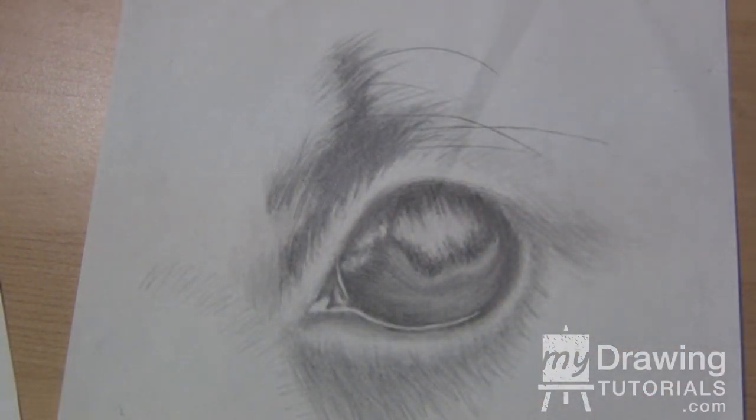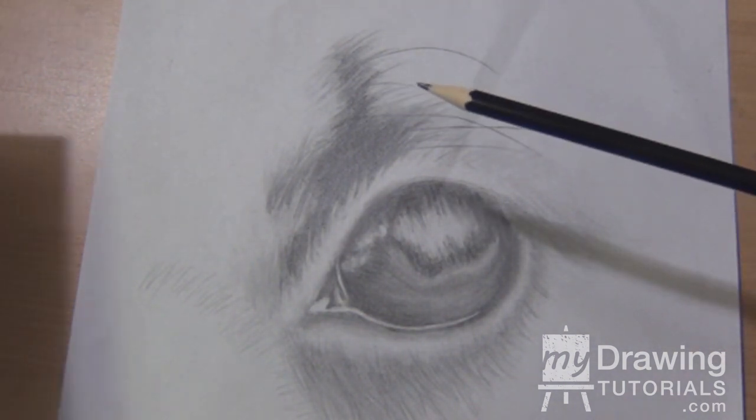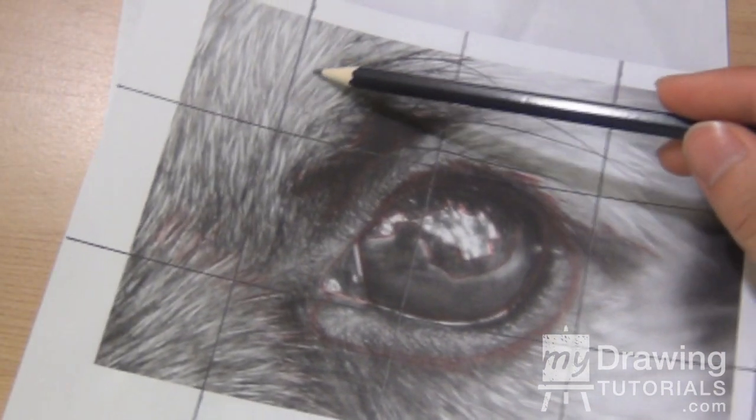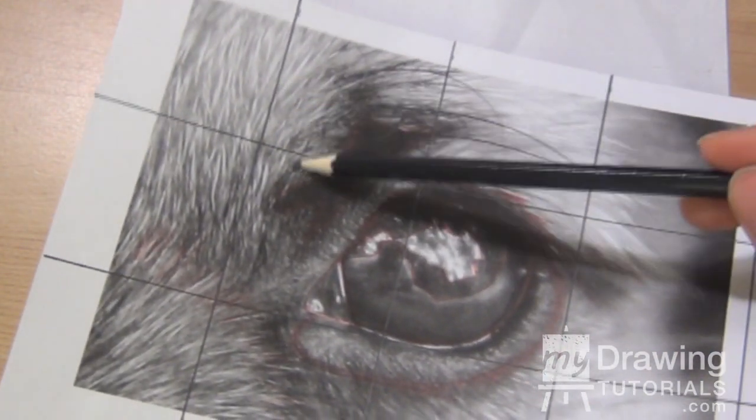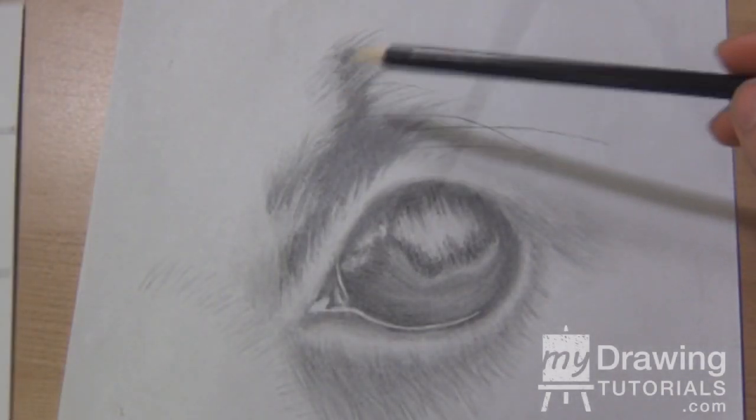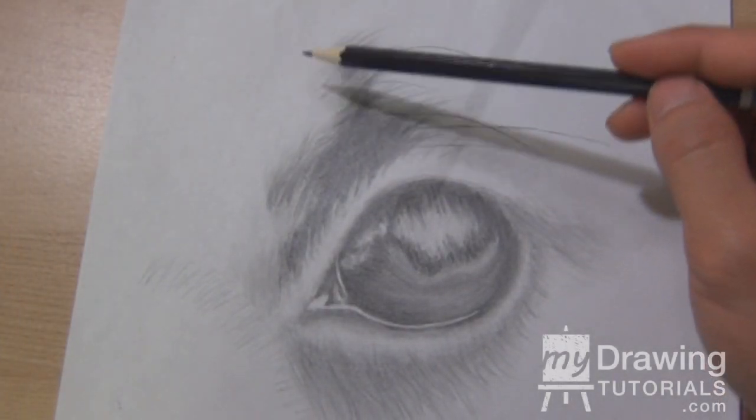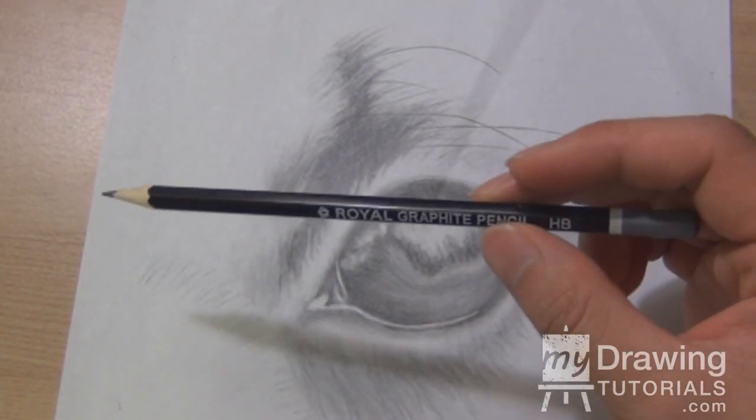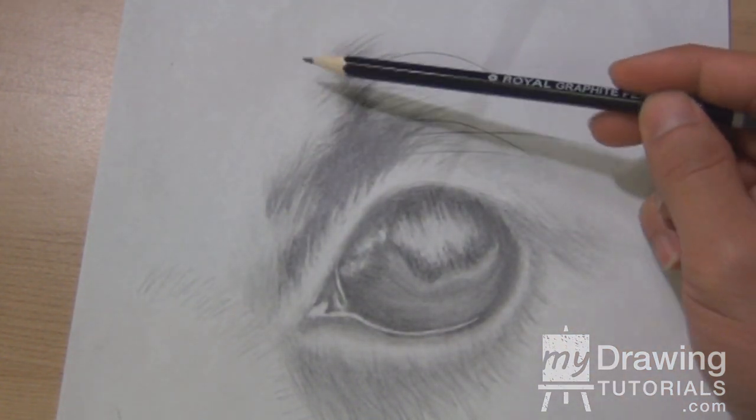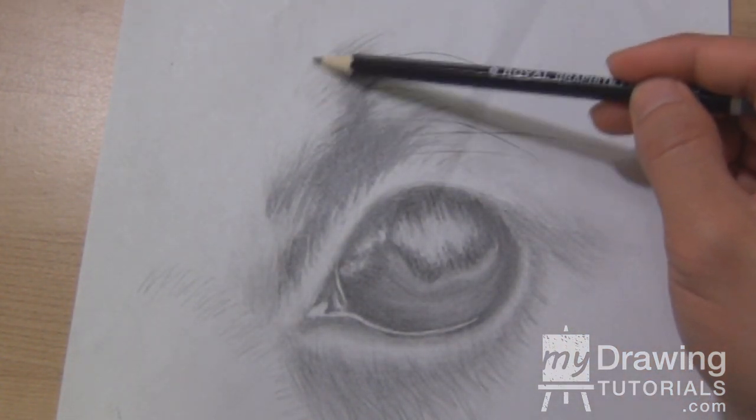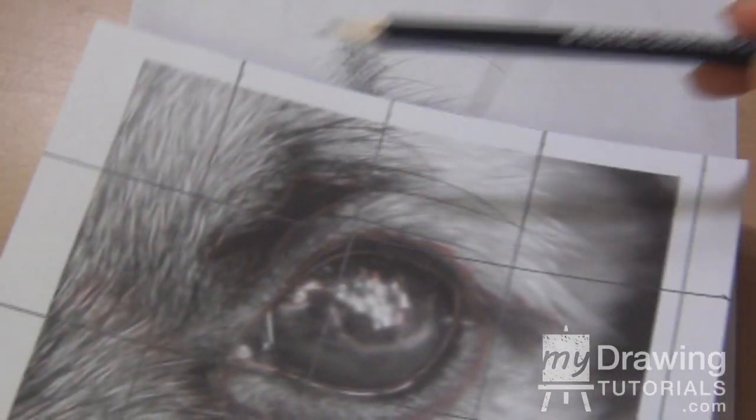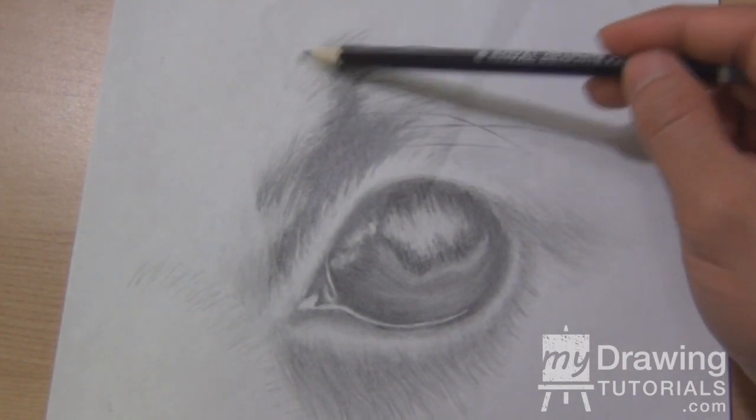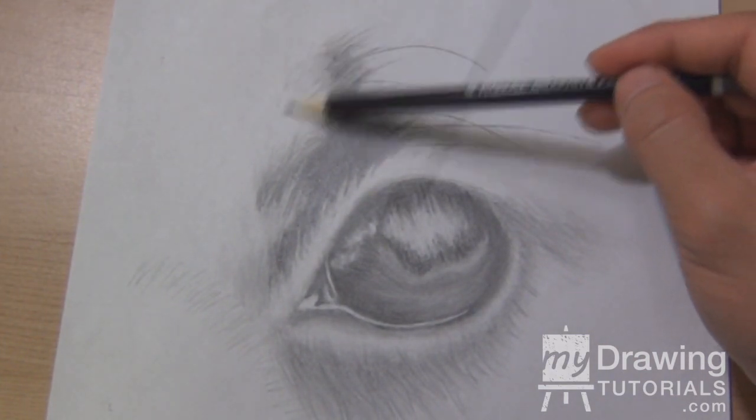So that looks a lot better. Now that we have that part finished let's work on adding some fur to this area right here. We won't draw in the whole area but I do want to add in some fur right here just so that this part doesn't look quite so lonely. So we're going to take that HB pencil and holding the pencil flat against the page I'm going to make very light strokes, because the fur in this area is very light so we just want to put in some grey tone in that area.